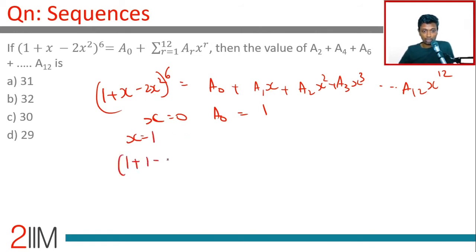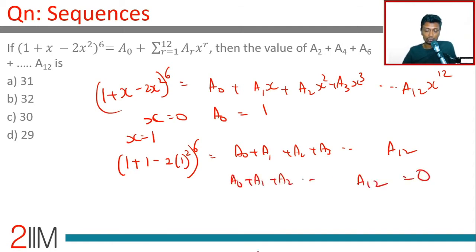Put x = 1: (1 + 1 - 2)⁶ equals A₀ + A₁ + A₂ + A₃ all the way till A₁₂. All of these are just 1, so this is 0. Therefore A₀ + A₁ + A₂ all the way till A₁₂ = 0.